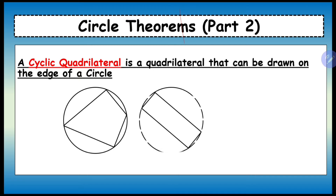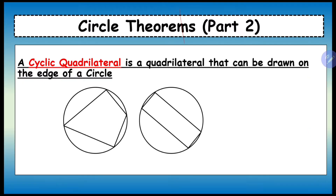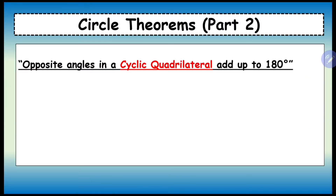Here's another example — as you can see, all four points touch the circumference, and here's a final example. Now the rule that you have to consider is that opposite angles in a cyclic quadrilateral add up to 180 degrees.